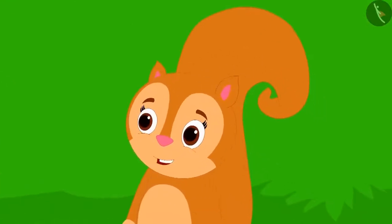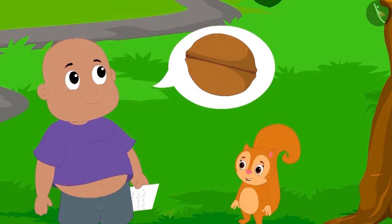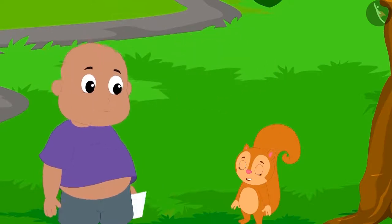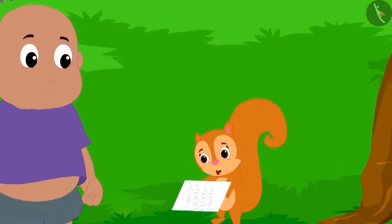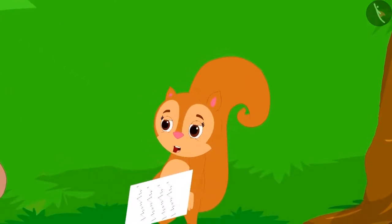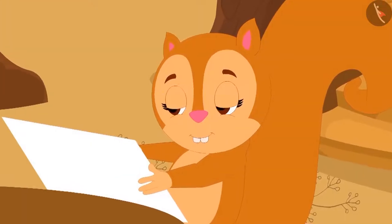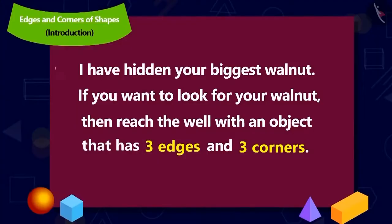Bablu had hidden Chanda's most loved big walnut and Chanda had been given instructions in the letter to look for the walnut. Chanda read the letter: I have hidden your biggest walnut. If you want to find your walnut, then reach the well with any object with three edges and three corners.